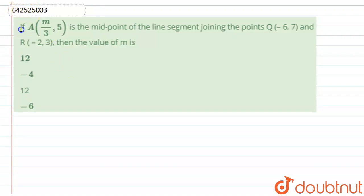Hello student, let us start with the question. Here we have given: if A is the midpoint of the line segment joining the points Q(-6,7) and R(-2,3), then the value of M is...